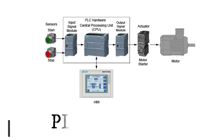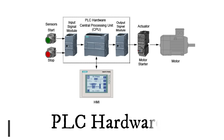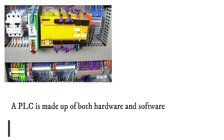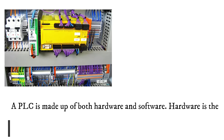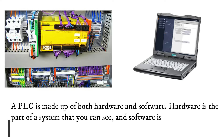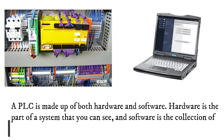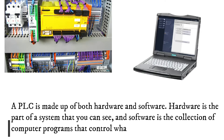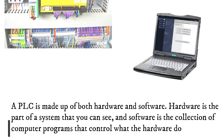In this video we are going to see Siemens PLC Hardware. A PLC is made up of both hardware and software. Hardware is the part of a system that you can see, and software is the collection of computer programs that control what the hardware does.